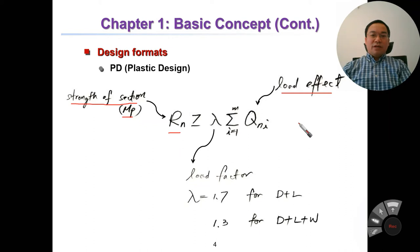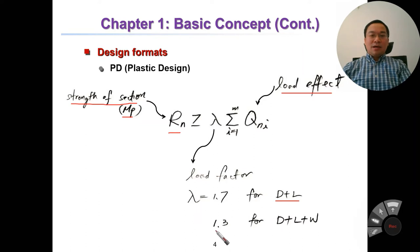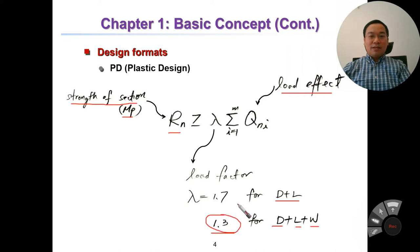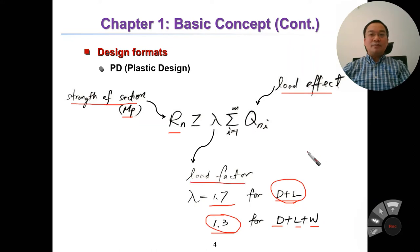Lambda is the load factor, which depends on the load and its combination. For example, lambda equals 1.7 for dead load plus live load, and lambda equals 1.3 for dead load plus live load plus wind load. Normally we use dead load and live load with lambda equal to 1.7. That is the Plastic Design format.